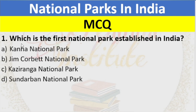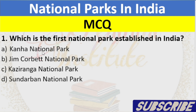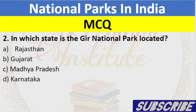Question 1: Which is the first National Park established in India? A. Kanha National Park, B. Jim Corbett National Park, C. Kaziranga National Park, D. Sundarbans National Park. Answer: B. Jim Corbett National Park.